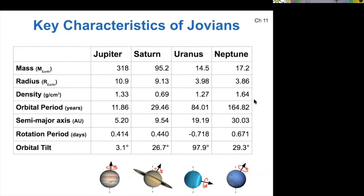Water has a density of exactly 1 gram per cubic centimeter. Jupiter, Uranus, and Neptune are all a little bit more dense than water, but Saturn is actually less dense, which means that if we could somehow submerge it, it would float. We'll talk about all the other values in this table as we go through the lecture — they're all here at the top of the slide deck for reference.